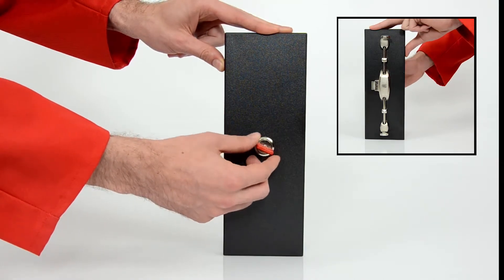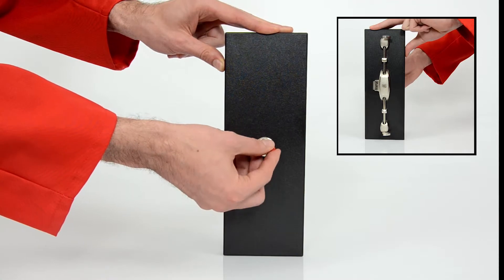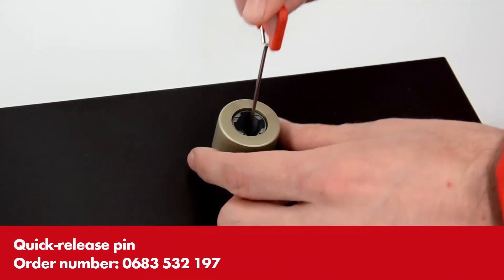All locks, cylinders and interchangeable cores can thus be used in a clockwise or anti-clockwise direction. The quick-release pin is for exchanging the turning knob.